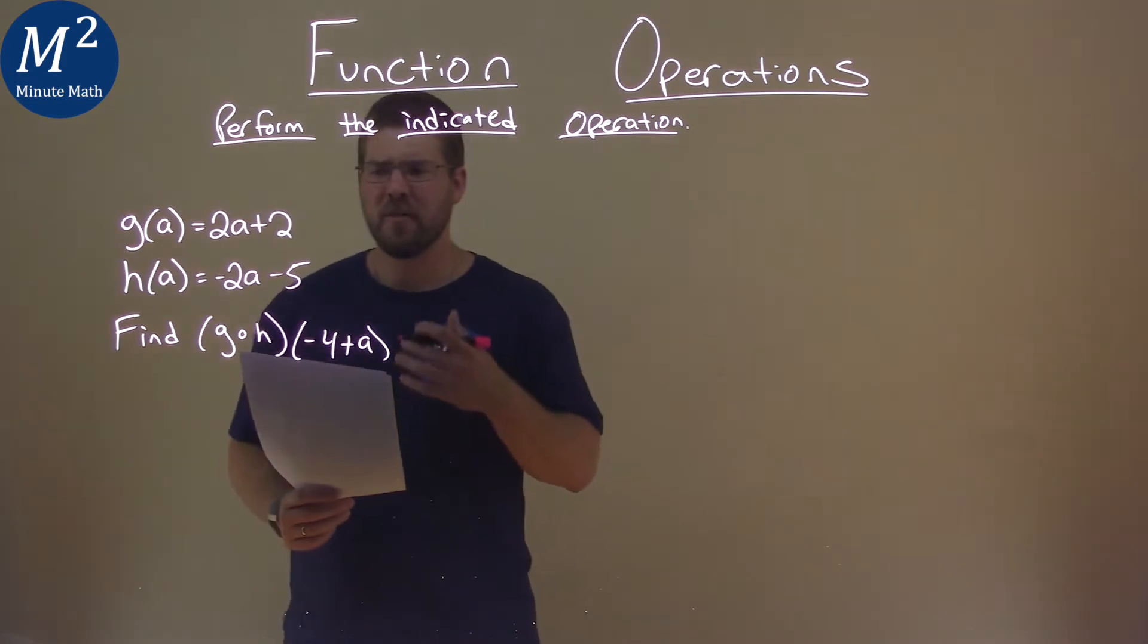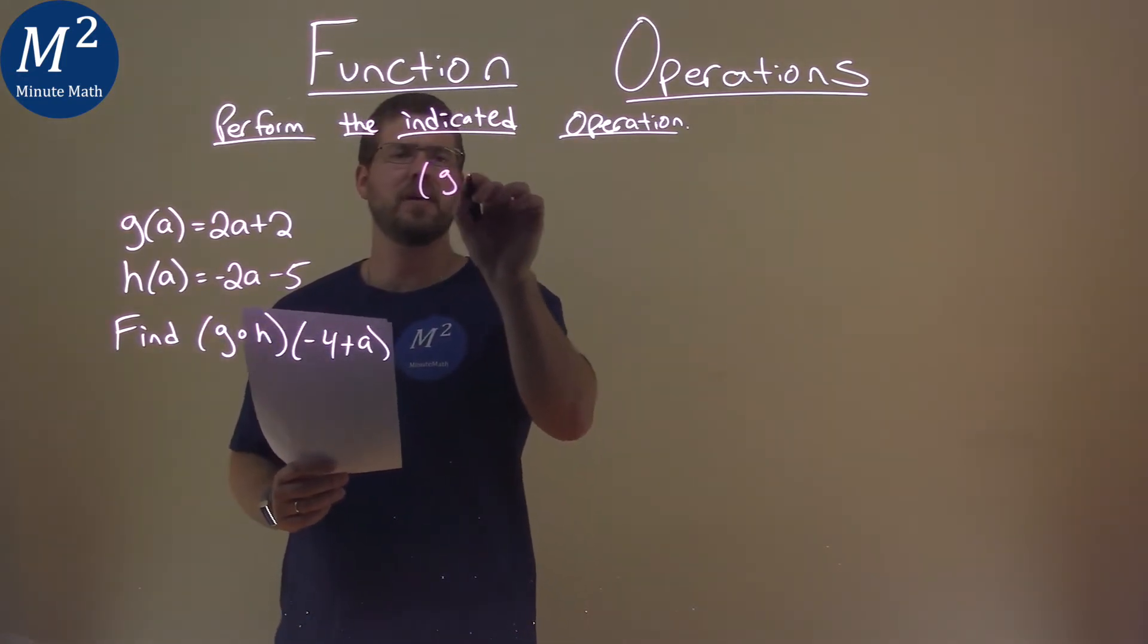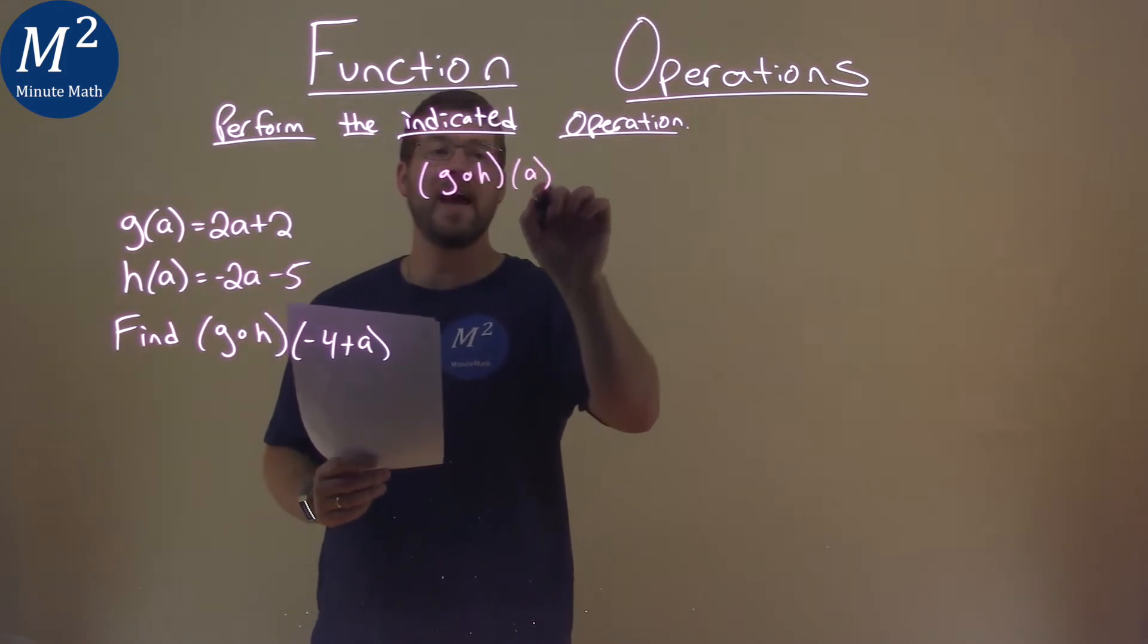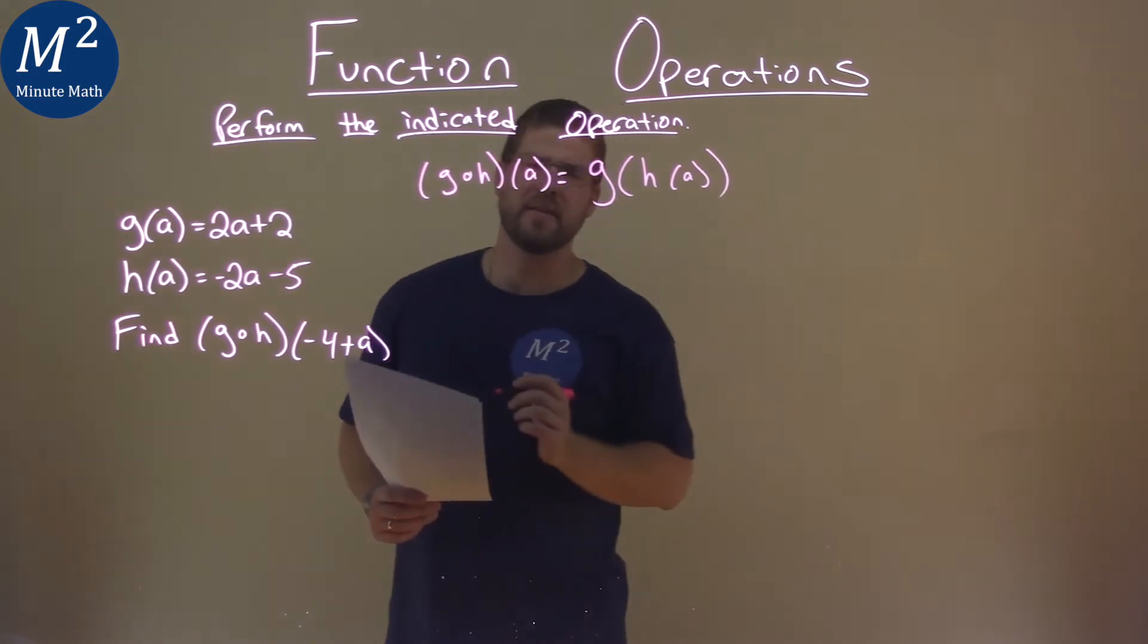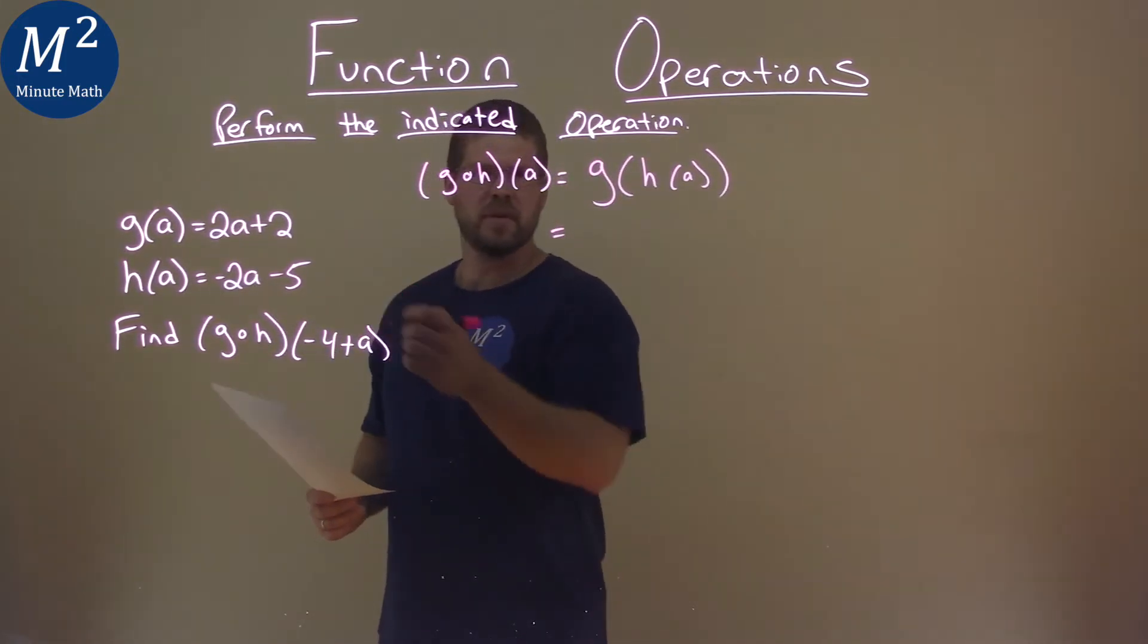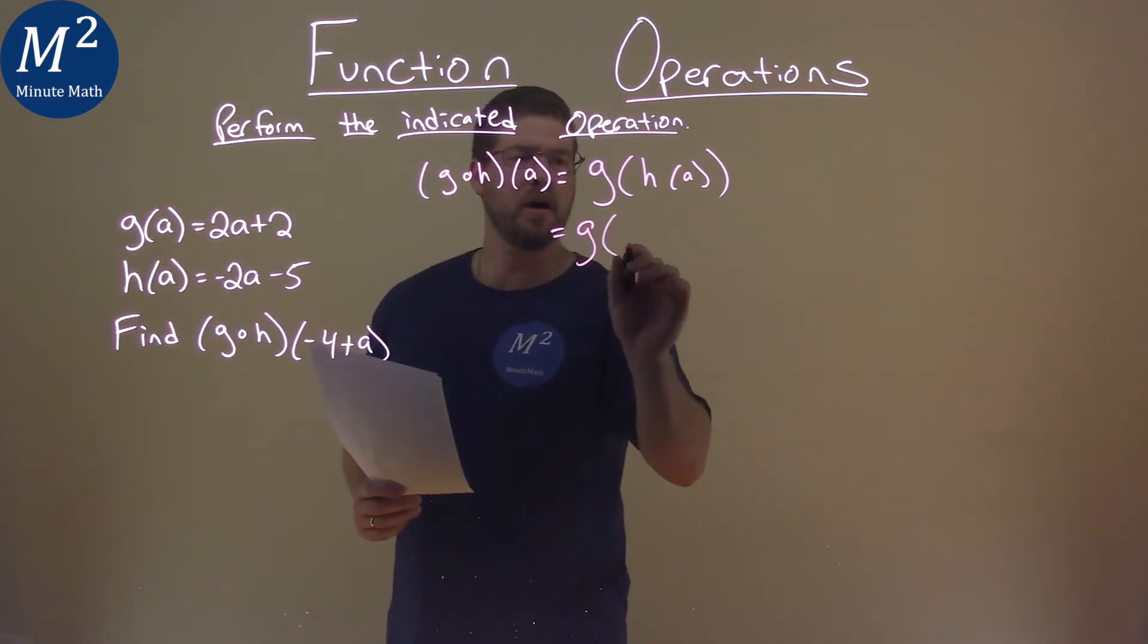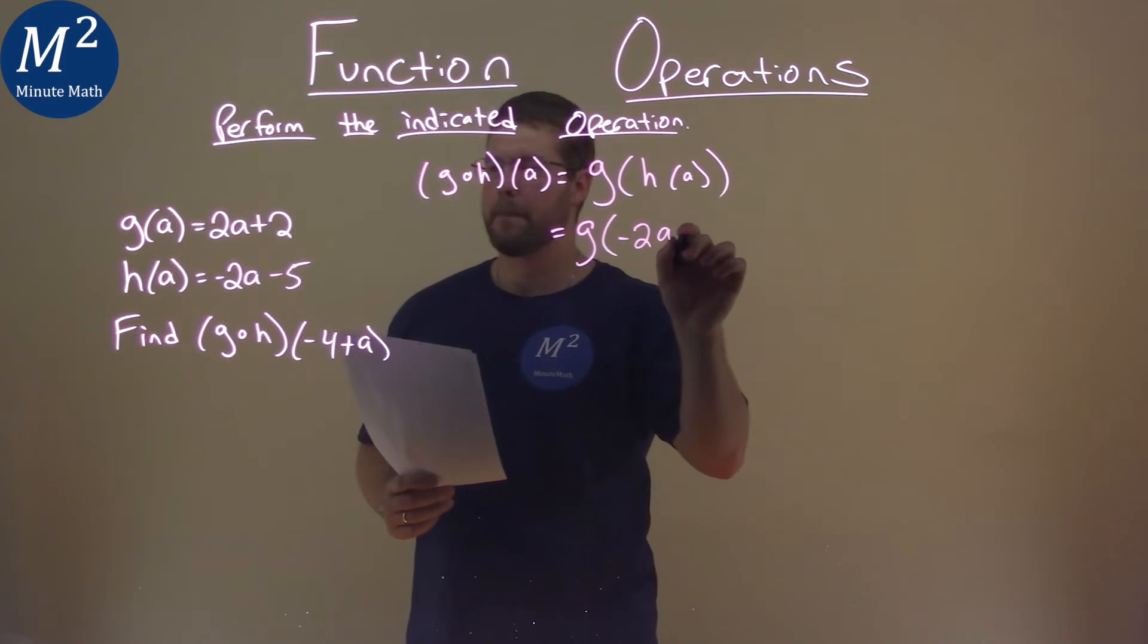Well, what is g of h of a first? Let's get that out of the way. g of h of a is equal to g(h(a)), written like this. Well, we know what h(a) is. It's given to us. So g of, instead of h of a, let's put our negative 2a minus 5 here.